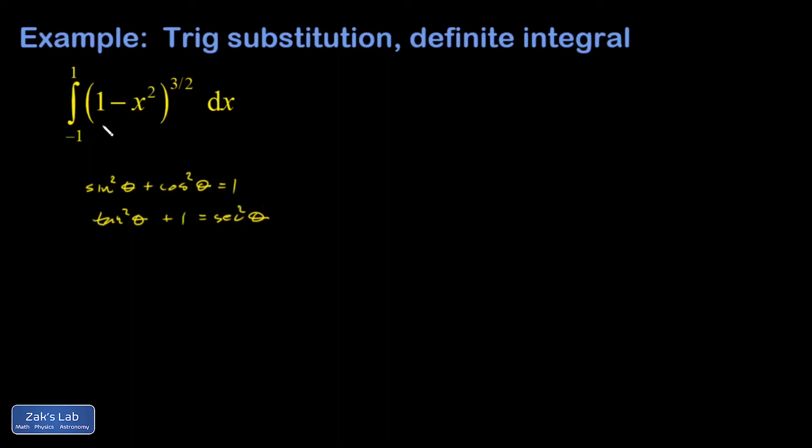Here I see a constant minus a variable thing squared, which I could get out of this first identity. So I'm going to write cosine squared theta is 1 minus sine squared theta. That's a constant minus a variable thing squared, so that fits the form of my integral.